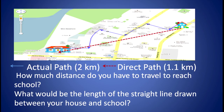You can see the map on your screen, where the blue solid line shows the actual path and the red dotted line shows the direct path from your home to school. So, how much distance do you have to travel to reach your school? It is the actual path that is 2 kilometers. What would be the length of the straight line drawn between your house and school? It is the direct path that is 1.1 kilometers.